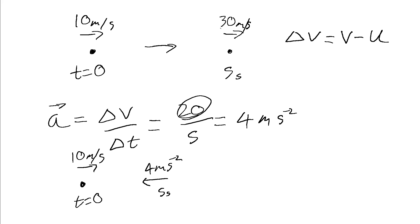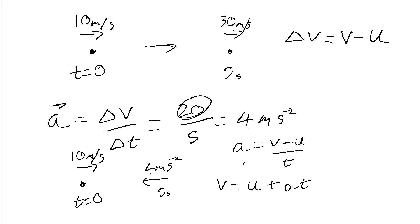So we took our final velocity of 30, took off 10, and that gave us a change of 20. In this case it's V we want to find. Writing the equation: A is V minus U over T. Rearranging, we get V equals U plus AT. Now we've got to take care — our U is going in one direction and our acceleration in the other. Because they're vectors, one is going to take a negative sign, so we need to pick a direction and call that positive. I'll say the right-hand direction is positive, which means our acceleration is negative. Substituting in our values: V equals U, which is 10, minus 4 times 5.